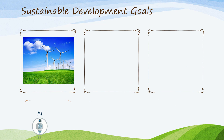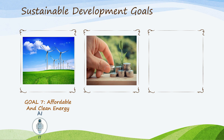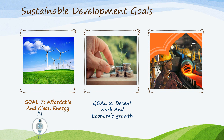The seventh goal is Affordable and Clean Energy — to ensure access to affordable, reliable, sustainable, and modern energy for everyone. The eighth goal is Decent Work and Economic Growth — to promote sustained, inclusive, and sustainable economic growth, full and productive employment, and decent work for everyone.